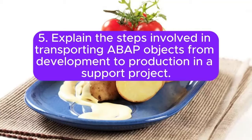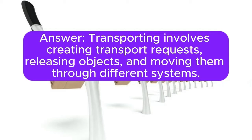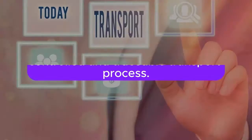Question 5: Explain the steps involved in transporting ABAP objects from development to production in a support project. Answer: Transporting involves creating transport requests, releasing objects, and moving them through different systems. Consultants use the Transport Management System (TMS) for a controlled and traceable transport process.